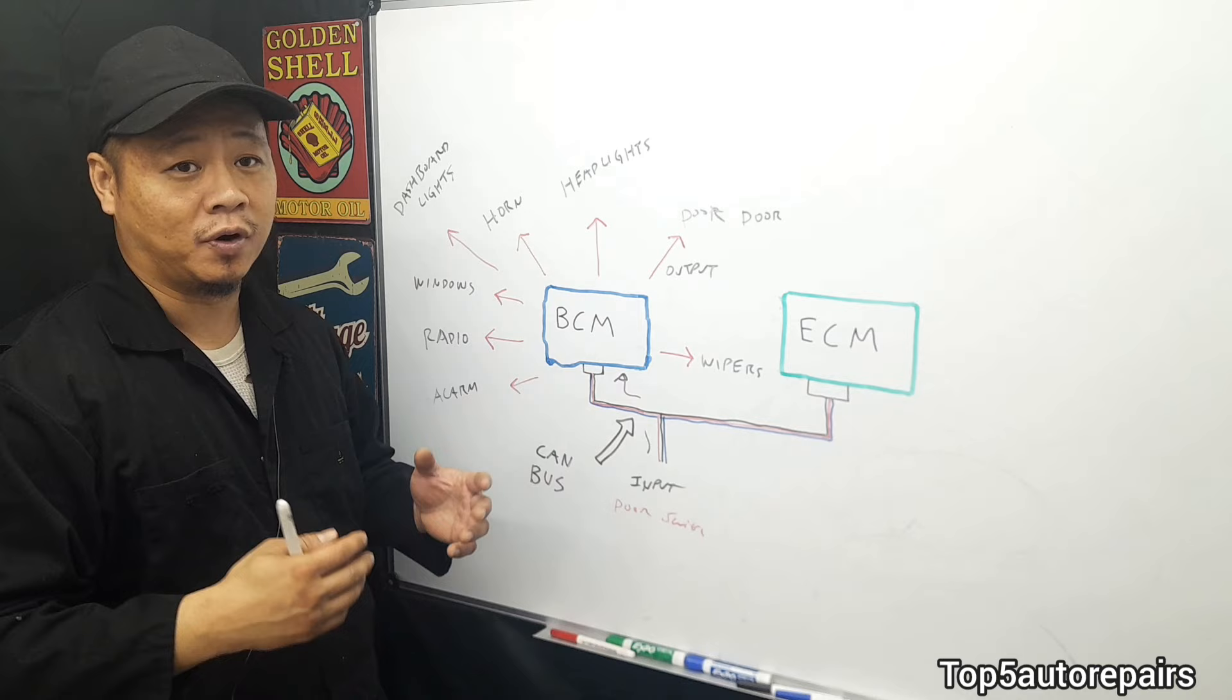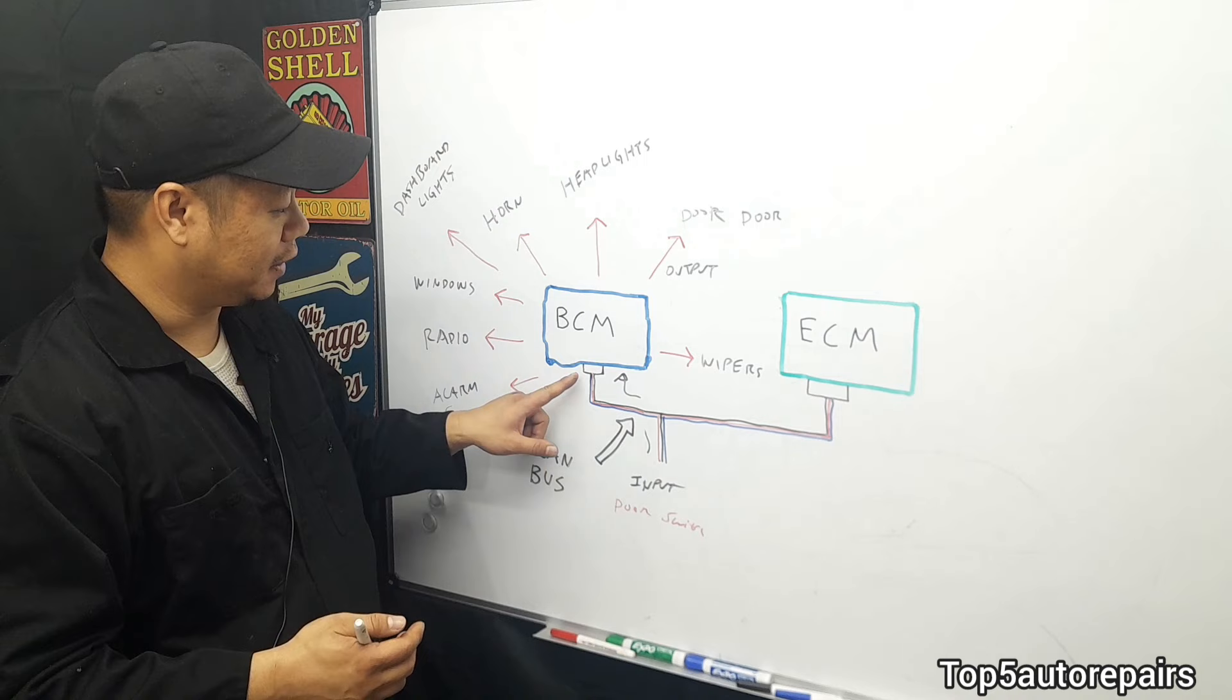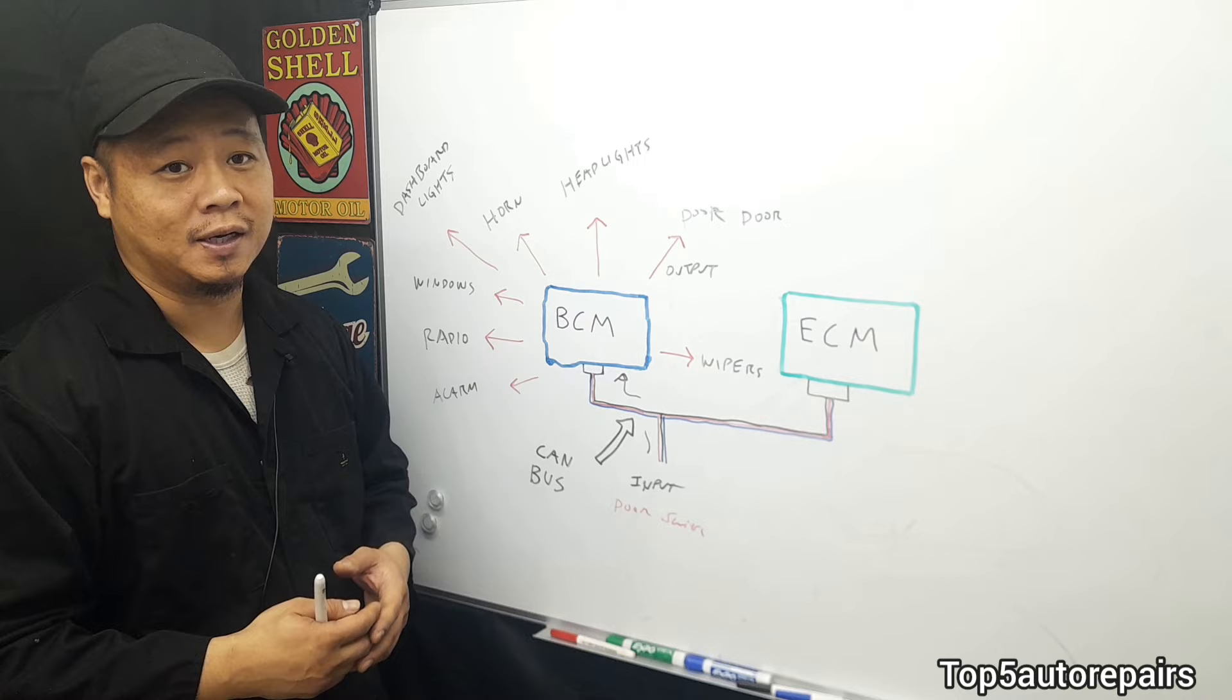And if you have a problem with all these issues, most likely the problem is going to be the BCM. However, before condemning the BCM, you want to check the connection, the CAN bus (basically the wires), the fuses and relays, and everything that can affect the BCM. As always, thank you for watching and subscribe to Top 5 Water Repairs.